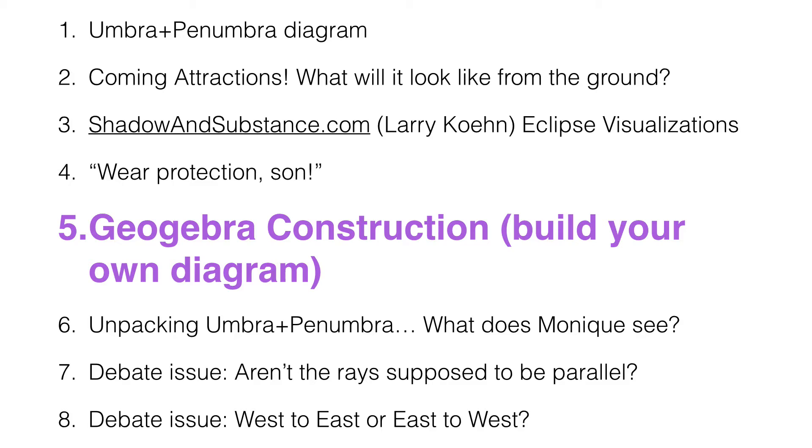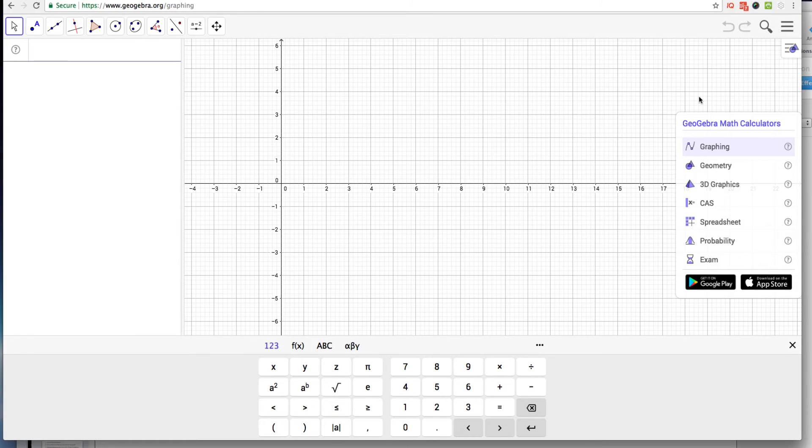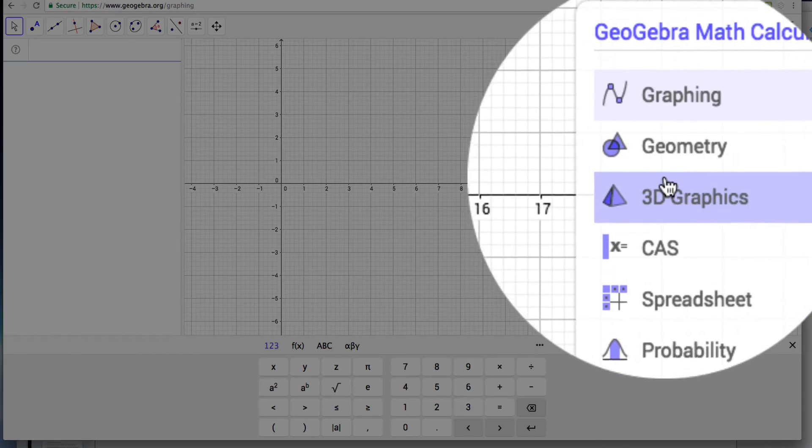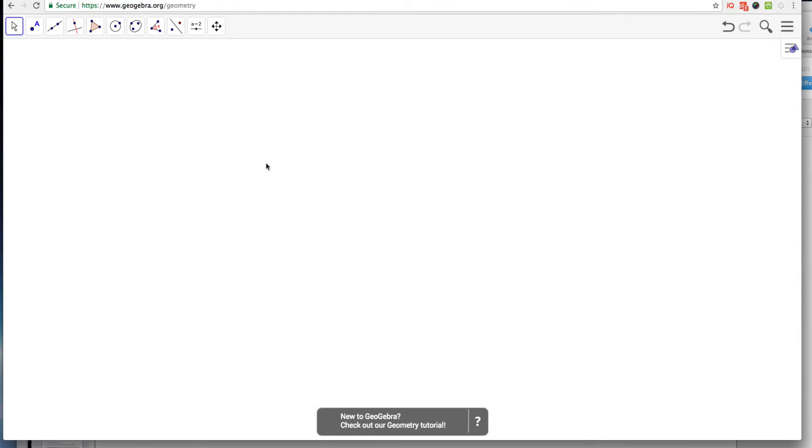Next, we're going to go to GeoGebra, and we're going to construct live an umbra-penumbra diagram. You're going to go to GeoGebra.org and then you'll click on Geometry under the Math Calculator selection. Alright, so here we are in GeoGebra. I'm going to click on Geometry and it gives me a blank screen.